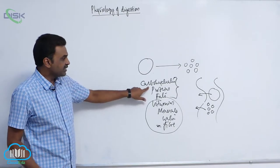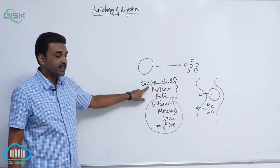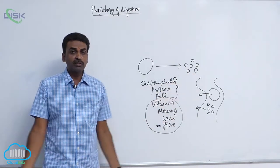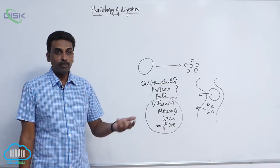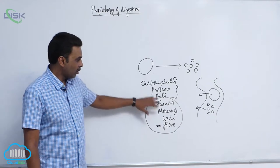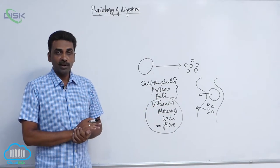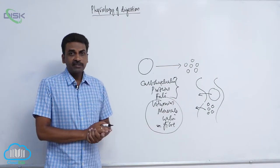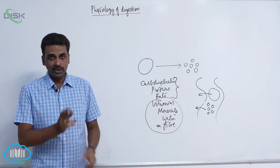Carbohydrates are in the form of polysaccharides. Proteins are long chains of amino acids. Fats are formed by a combination of fatty acids and glycerol — all in complex form and to be broken into simpler form. The act of digestion includes mechanical digestion and chemical digestion — two things.